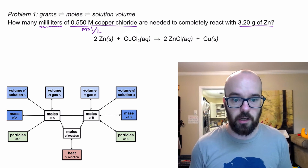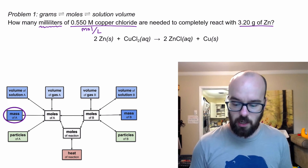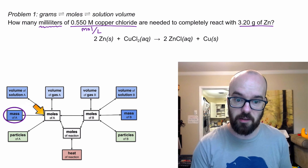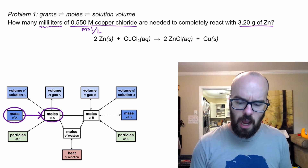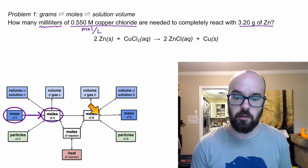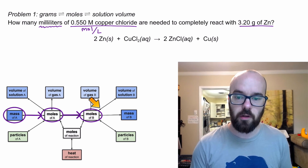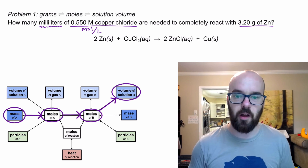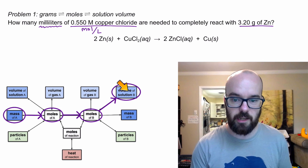Looking down at the stoichiometry map, I'm starting with mass of A — A would be the zinc. The only place I can go from there is to convert to moles of zinc. Then I need to convert to copper chloride, which is B in this diagram, so I do the moles-to-moles conversion. From there I can go to the volume of solution B, which is copper chloride, doing a moles-to-volume conversion. Those are all the steps I'll take.